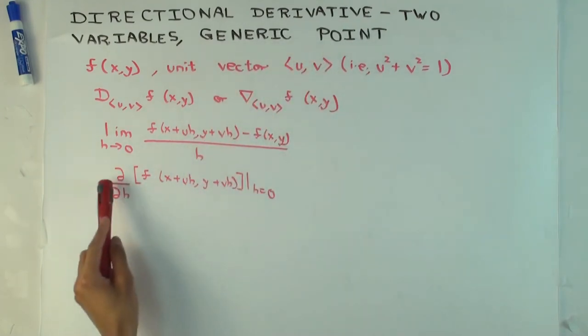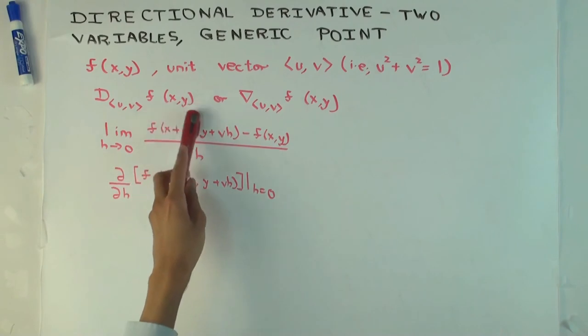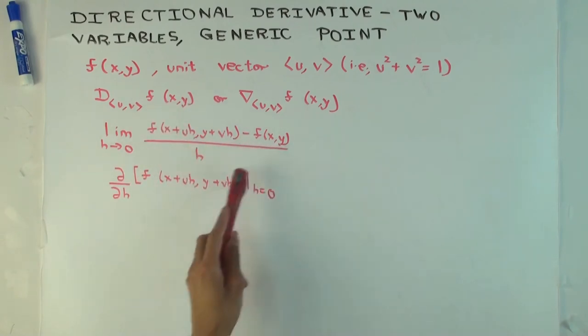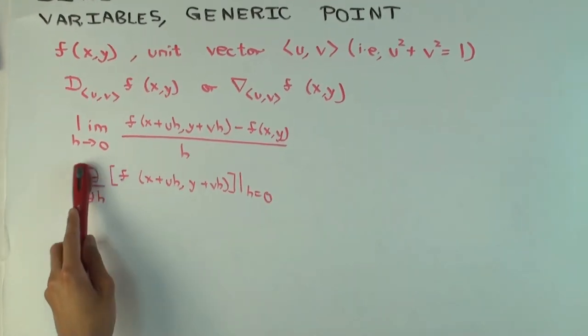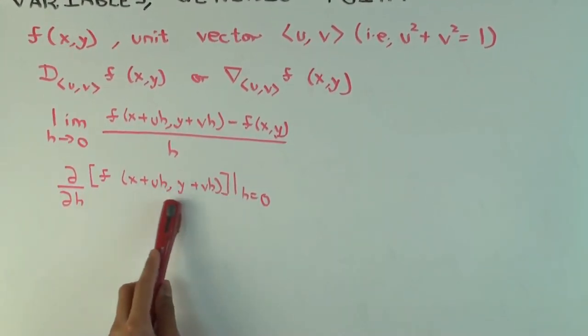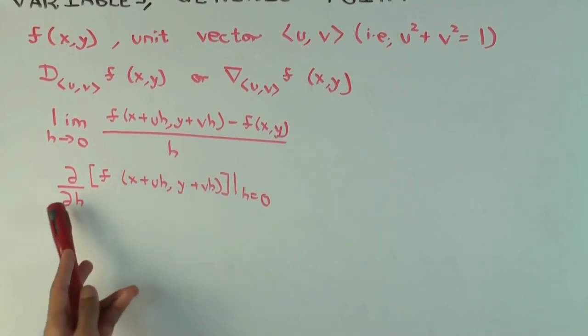So if you go back and review directional derivative for two variables at a fixed point, rather than the generic point, then we use x₀ and y₀ in place of x and y everywhere. And the other difference was there we used the ordinary derivative. But now we are using the partial derivative because x and y can also vary. So we need to specify that we are actually fixing x and y, and therefore we have this.